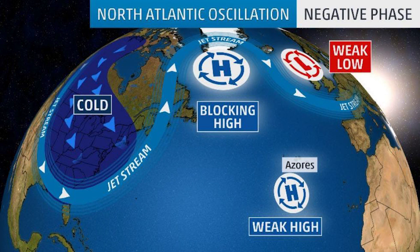In a negative phase — looking at a little graphic here — you can see there's more high pressure located over Iceland. This doesn't mean there's actually high pressure, but there's less low pressure over Iceland. What this leads to is the jet stream actually traveling over Iceland all the way into Greenland and then back down over Europe, and we have a much weaker high pressure system over the Azores Islands. This leads to a slowing down of the jet stream.